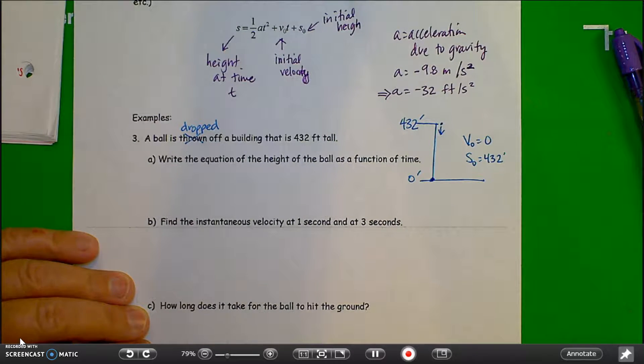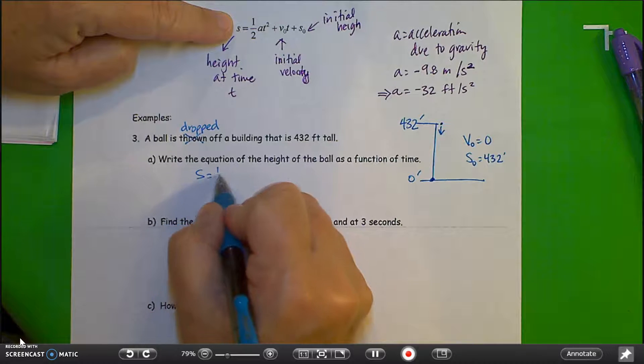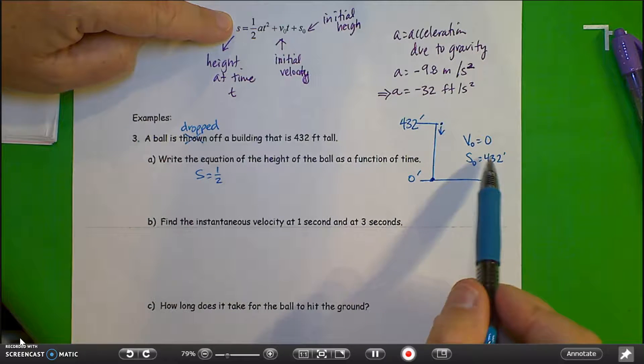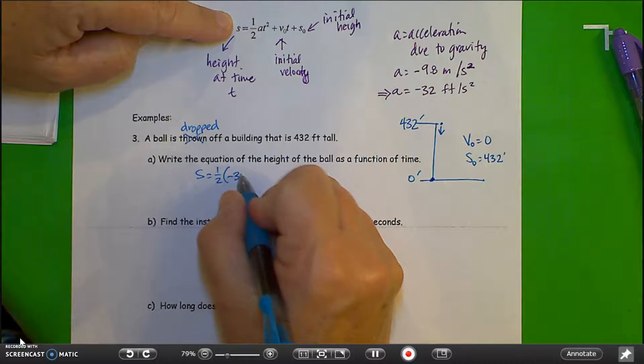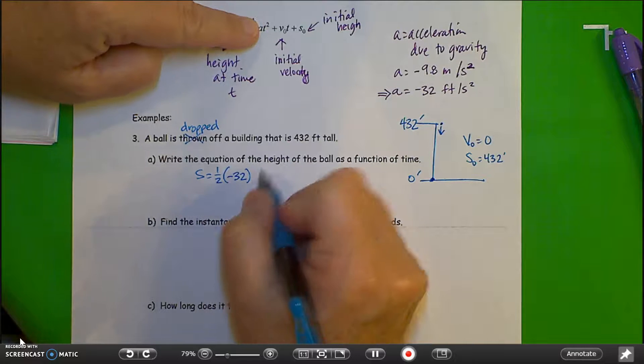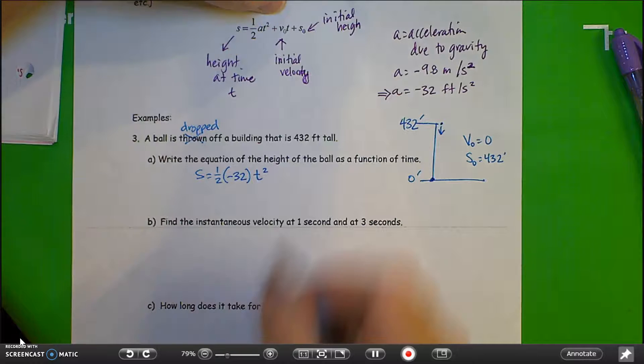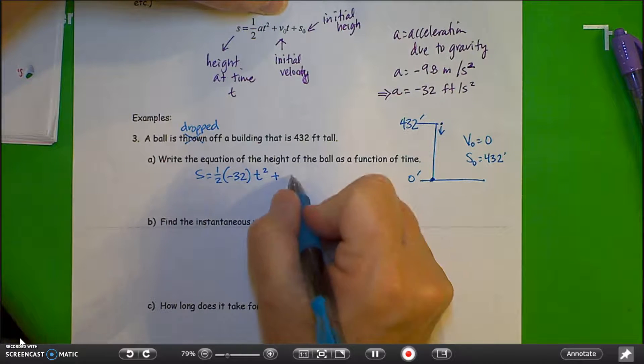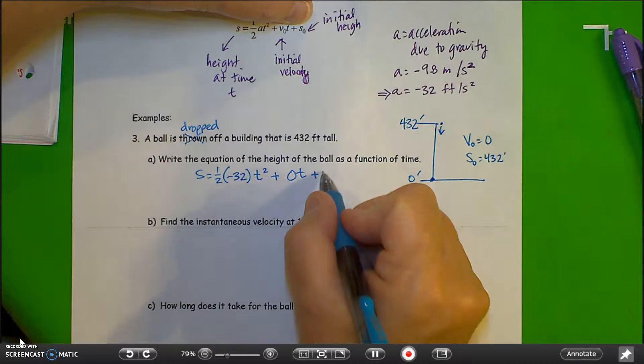So let's put together the formula. We're going to use this. So we have S equals one-half. Since our units are measuring feet, we're going to use acceleration due to gravity of negative 32. The t values remain in this function, t squared. Plus initial velocity is zero times t. Plus initial height, 432.